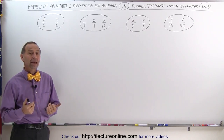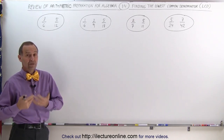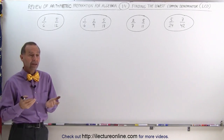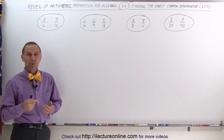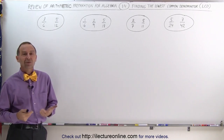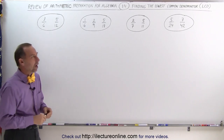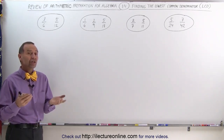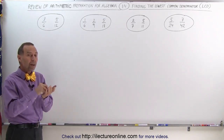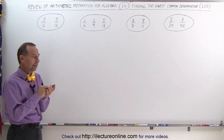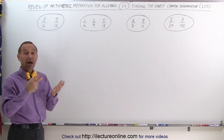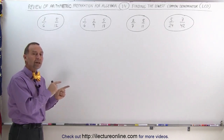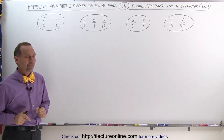How do we do that, and what does it even mean to find the LCD? Before we can do that, we need to know what an LCD is. What is the lowest common denominator? Well, the definition is: the lowest common denominator is a number, a denominator that all the other denominators fit into evenly.